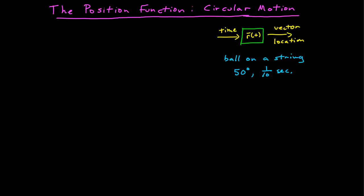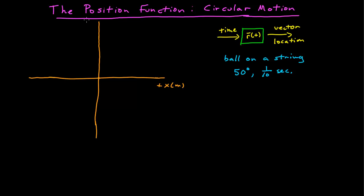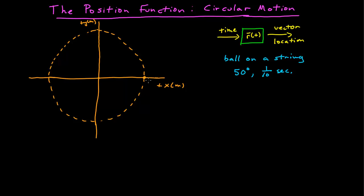Let's look at that motion diagram and get ourselves a coordinate system. We're going to put the origin of the coordinate system at the center where the ball is being thrown. This is the positive x, and here's positive y, in meters. We're going to say at t equals zero the object lies along the x axis, and the string is about 0.8 meters long.